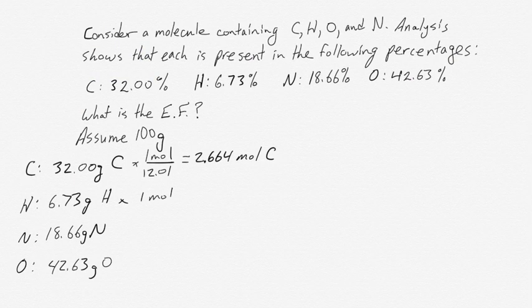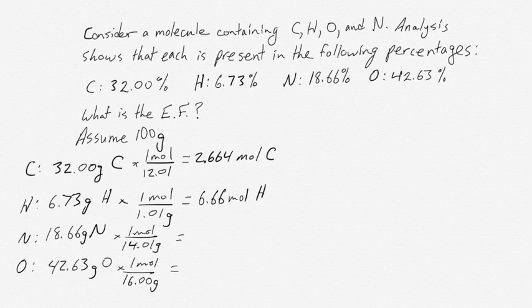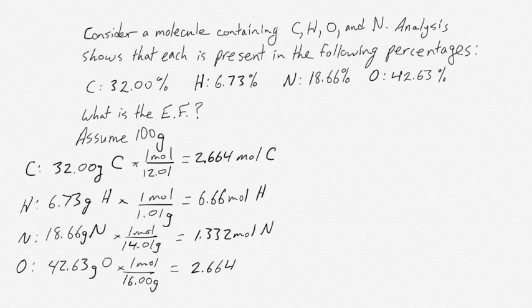We do a similar thing for hydrogen, nitrogen, and oxygen, and we end up with moles of each of those as well. So we end up with 6.66 moles of hydrogen, 1.332 moles of nitrogen, and 2.664 moles of oxygen.